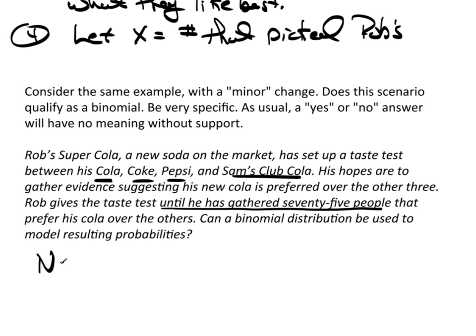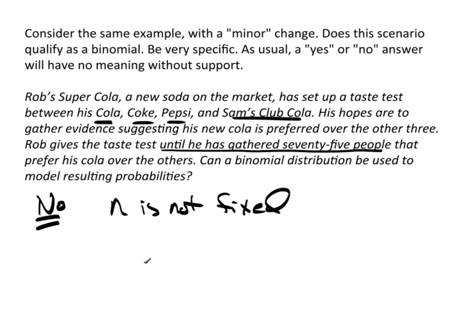And the answer here is absolutely no. The problem is N is not fixed. This is a scenario where he's going to keep going until he gets 75 people that say they like his best. Well, what would N be? We don't know. It could be 100, it could be 750, it could be 10,000. Who knows how many people he's going to have to go through before he gets 75 that say they like his best.